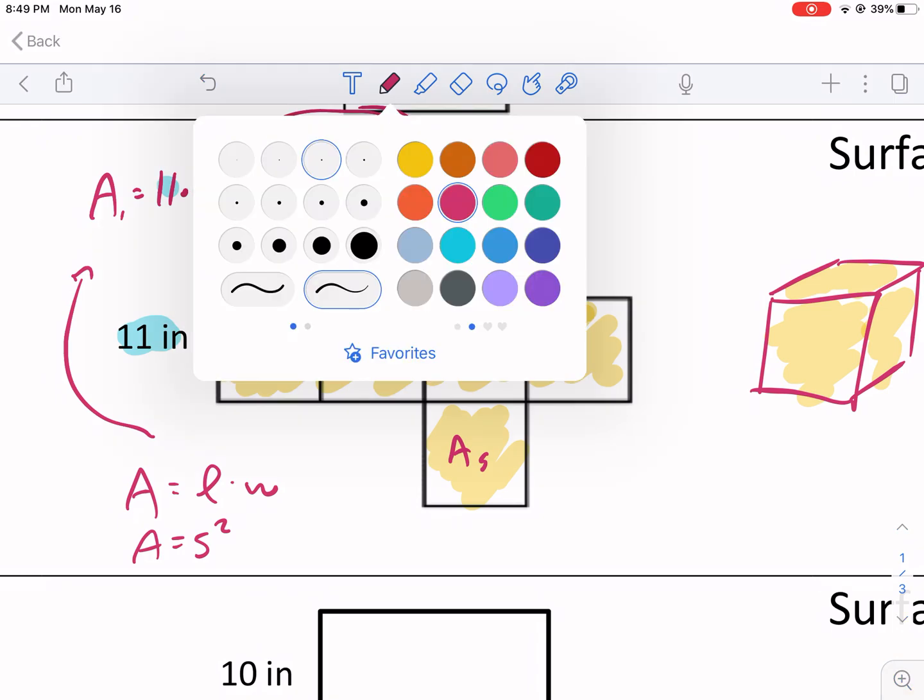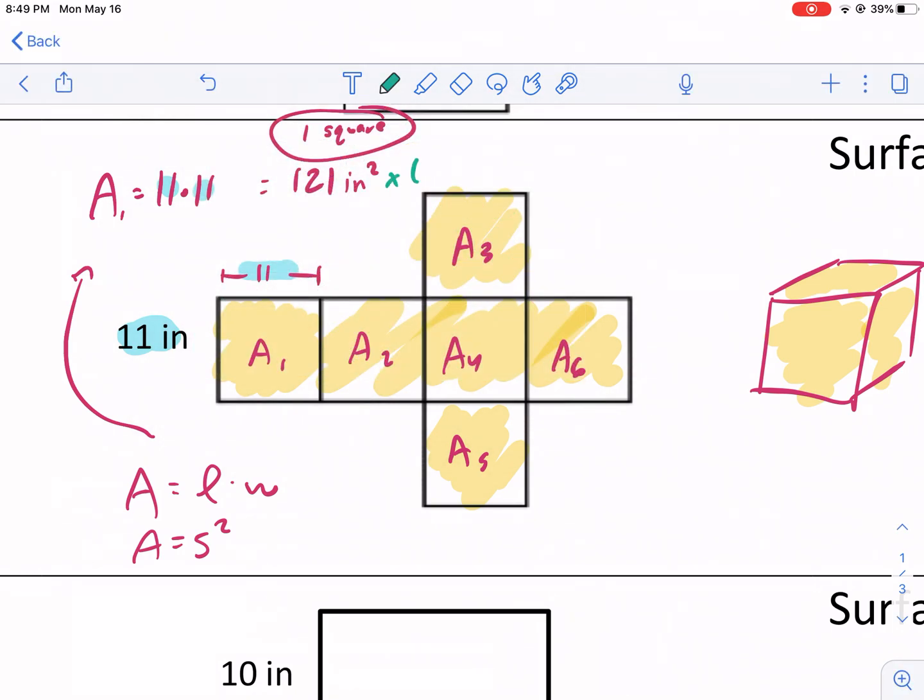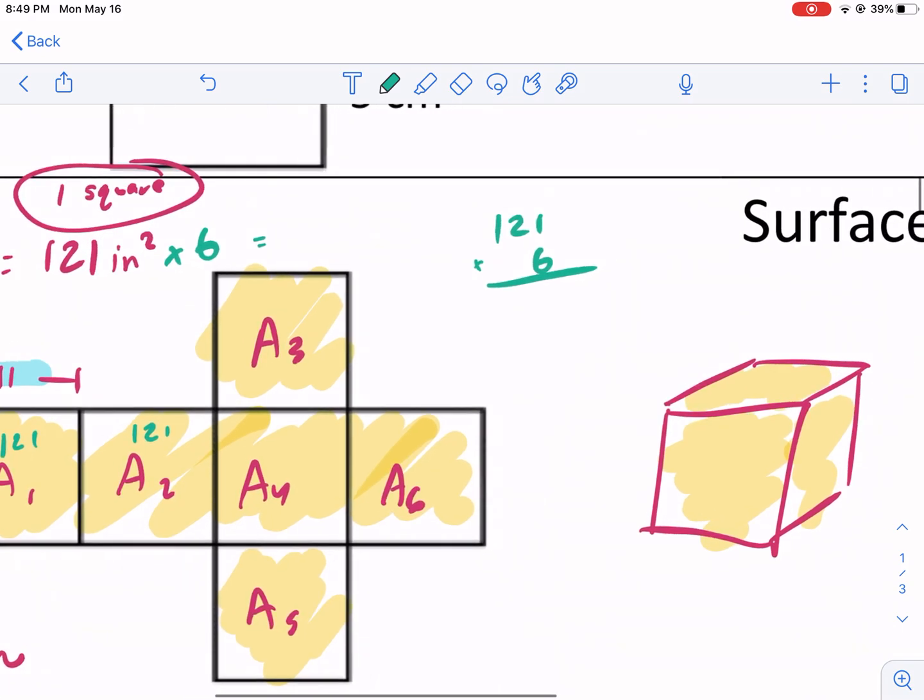I know there's six of them, so what I need to do here is multiply this by six. If you wanted to, you could just do 121 plus 121 plus 121, but that's a waste of time. So I'm just going to multiply this by six. Let's just use the standard algorithm.